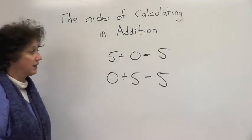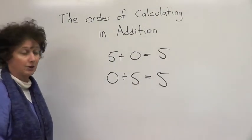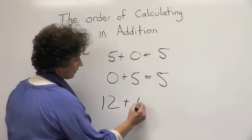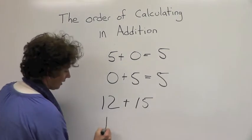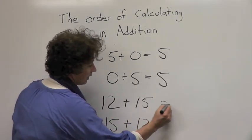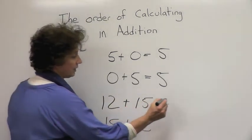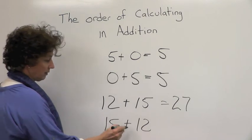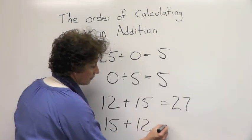So let's look at larger numbers and see if the same thing happens with larger numbers. Let's take 12 plus 15 and 15 plus 12. Let's look at the first one: 12 plus 15 is 27.